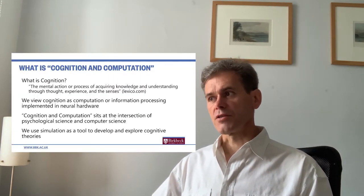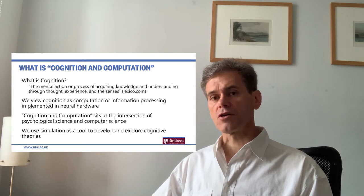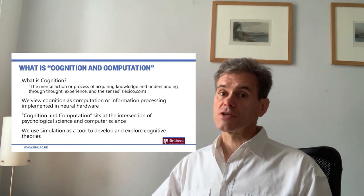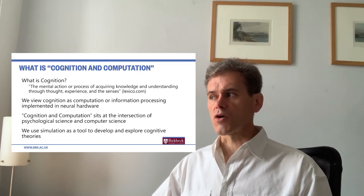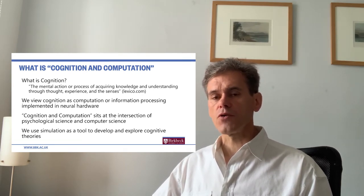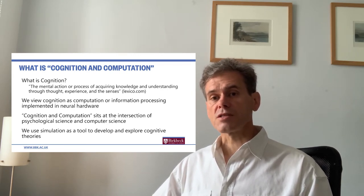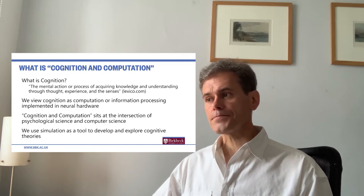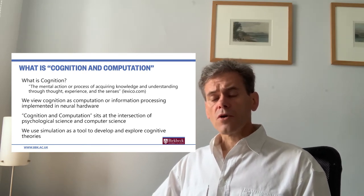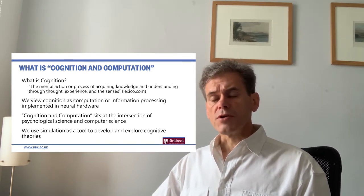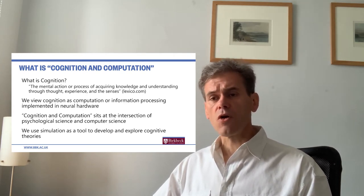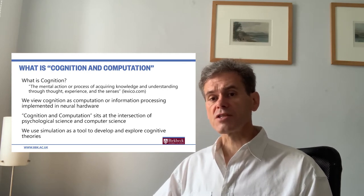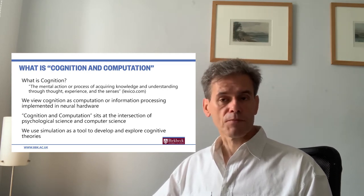Let me start by explaining the title — what do we mean by cognition and computation? A dictionary definition of cognition is something like the following: cognition is the mental action or process of acquiring knowledge and understanding through thought, experience, and the senses. So cognition is about the mental processes underlying thought, and one of the dominant views is that these mental processes are the product of information processing.